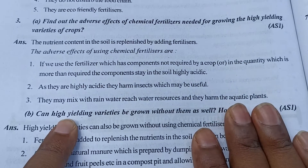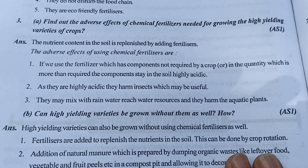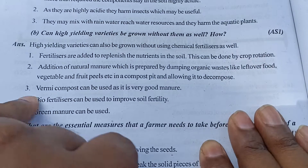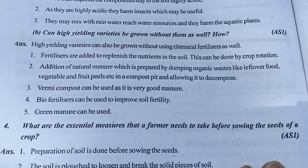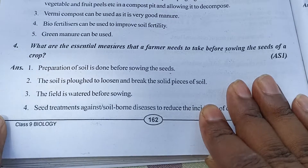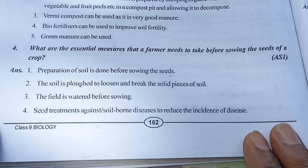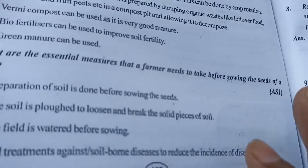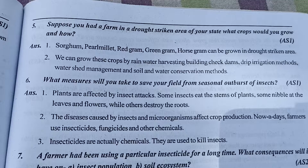After that, this is the third question and this is the answer. This is the third question part B answer. If it is complete, come to the fourth one - this is the fourth question and this is the answer. After that, this is our fifth question and this is the answer.